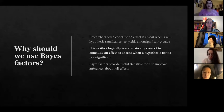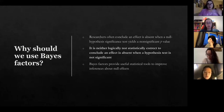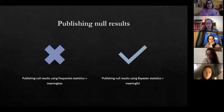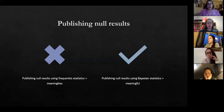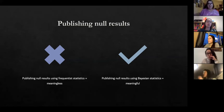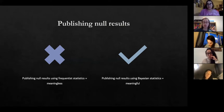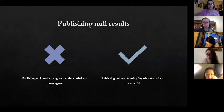Bayes factors provide useful statistical tools to improve inferences about null effects. There are other ways using frequentist statistics, but this is what I learned first and find quite easy and intuitive to explain. When publishing, people fear null results won't get published. But to get null results published meaningfully, we need statistics that are meaningful — and Bayes factors can make those null results meaningful and tell us what we can actually conclude.